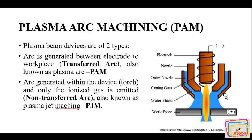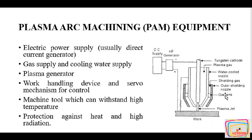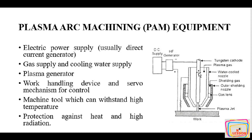In this process, we need equipment such as: first, a power supply, which is usually a direct current generator supplied through DC supply; a high-frequency generator for the plasma; gas supply and cooling water supply around and within the nozzle; a work-handling device or servo-control mechanism for movement of the torch; and a material tool that can withstand high temperatures, which is used as a tungsten cathode electrode, along with protection against heat and high radiation.